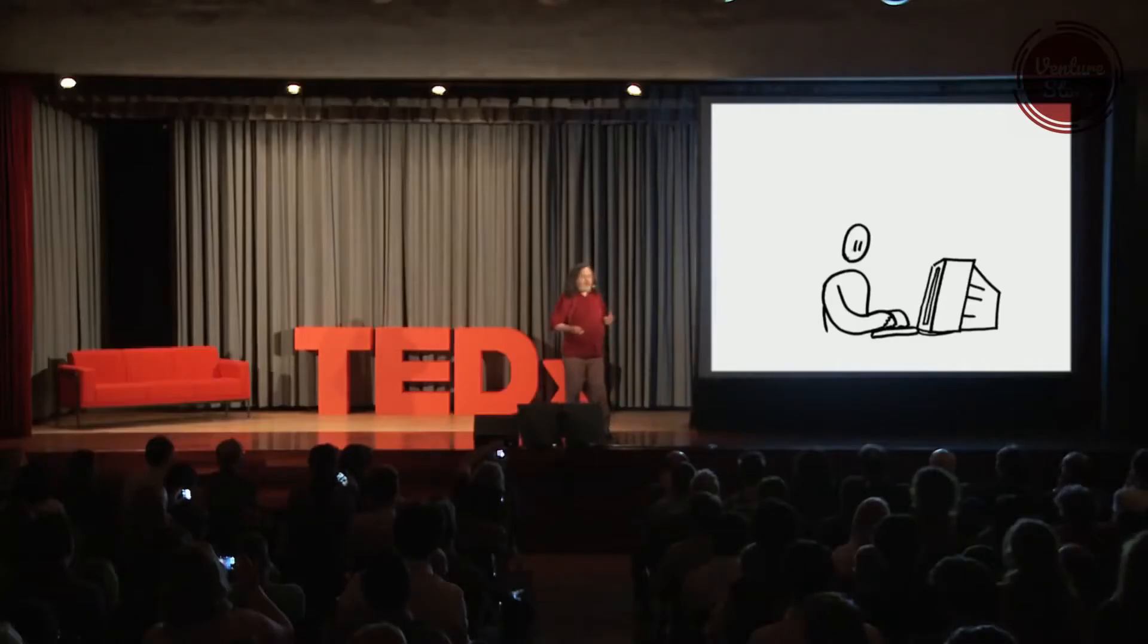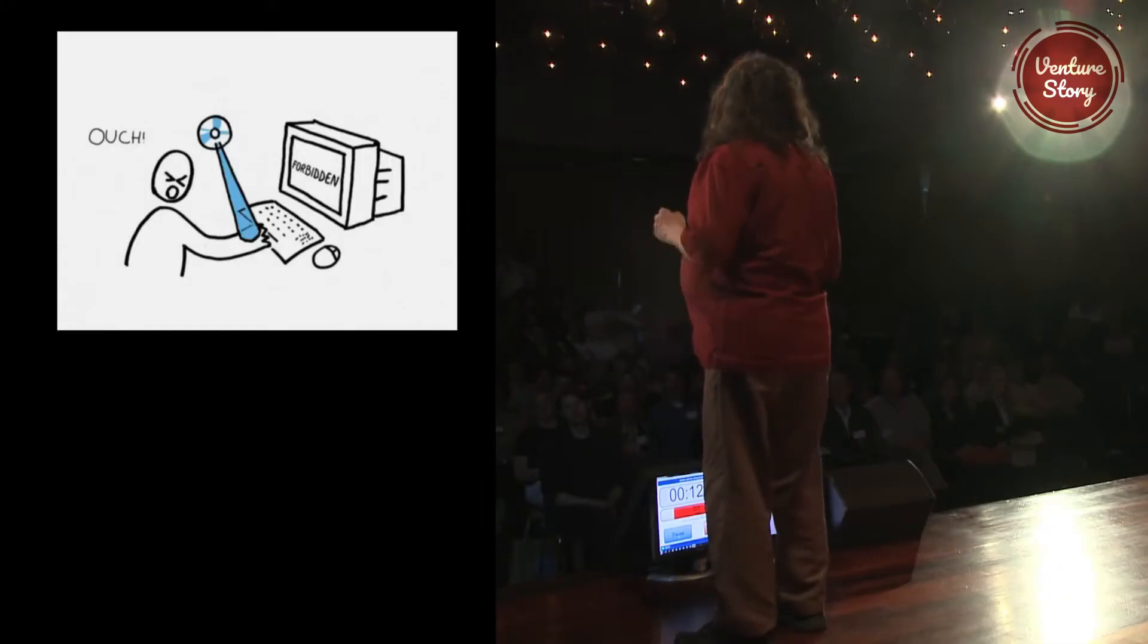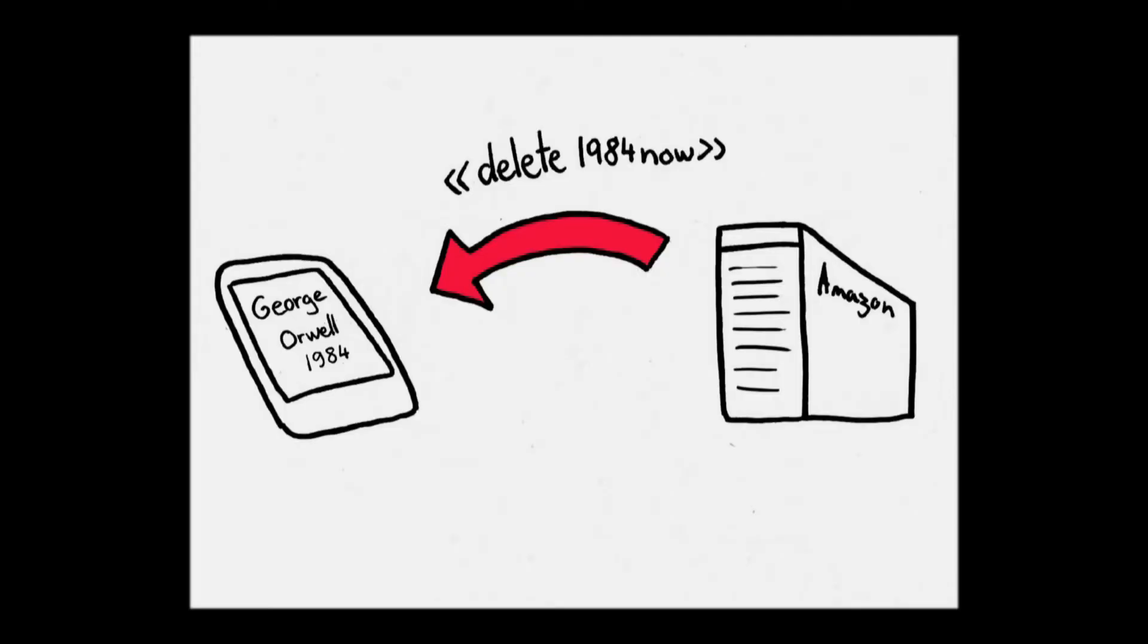Who controls your computer? Is it you or is it some big company that's really controlling it? Sometimes the software remotely deletes books as Amazon did with 1984.